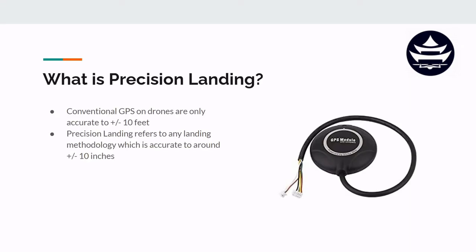So what is precision landing? How are we defining that phrase? Well, in order to understand how we're defining precision landing, we should look at it from a relative perspective. Most conventional drones have a GPS attached to them, and those GPSs allow the drone to land around plus or minus 10 feet on a landing target on the ground.